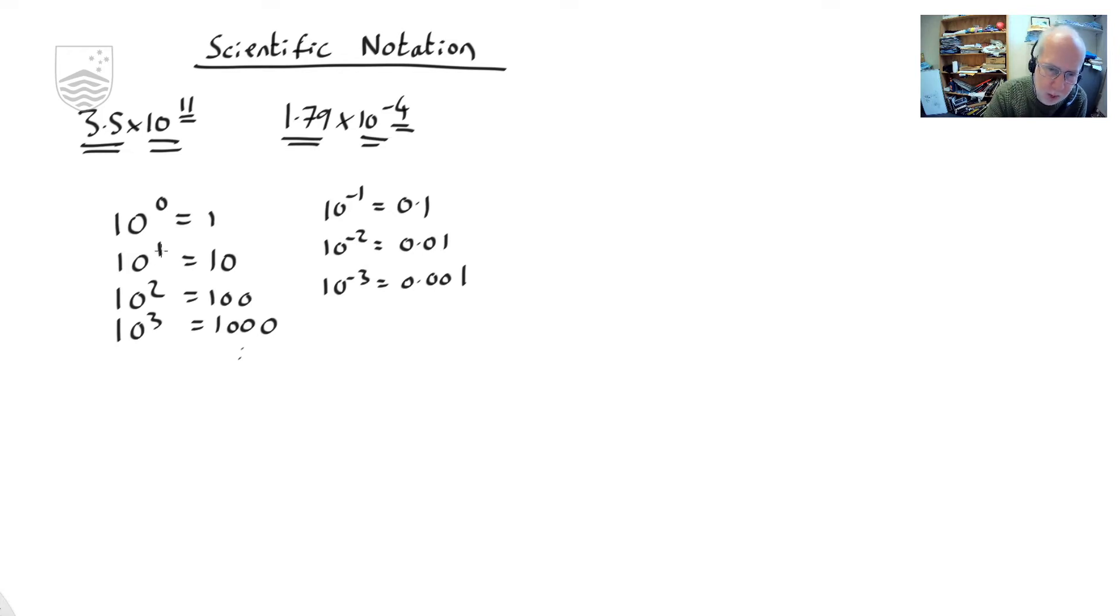So that's what the 10 to the whatever means. Note that as this number goes up everything goes up by a factor of 10. So 10 to the 11 is 10 times more than 10 to the 10 not just one more. So going from like 10 to the 20 to 10 to the 23 is making a number a thousand times bigger not just three times bigger. So this little index up here makes a huge difference.